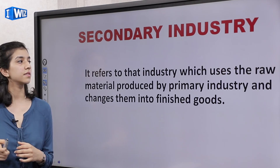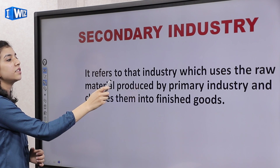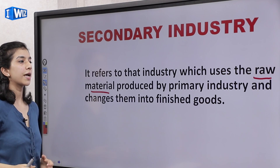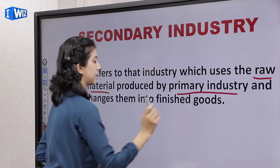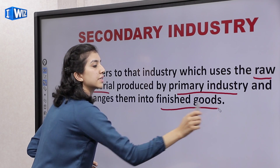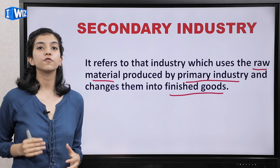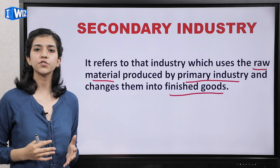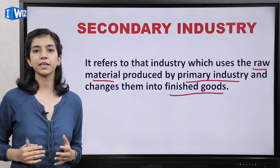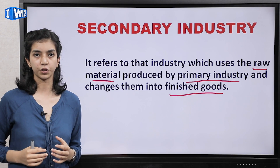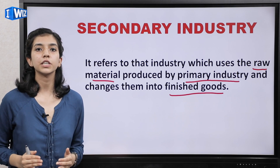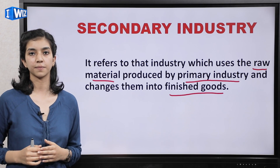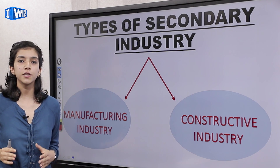Now we have secondary industry. What are secondary industries? It refers to that industry which uses the raw material produced by primary industry and changes them into finished goods. As I gave you the wood example — wood logs are created in primary industry and sent to other industries where they are converted into furniture. So the furniture industry is the secondary industry — here is the final good production.